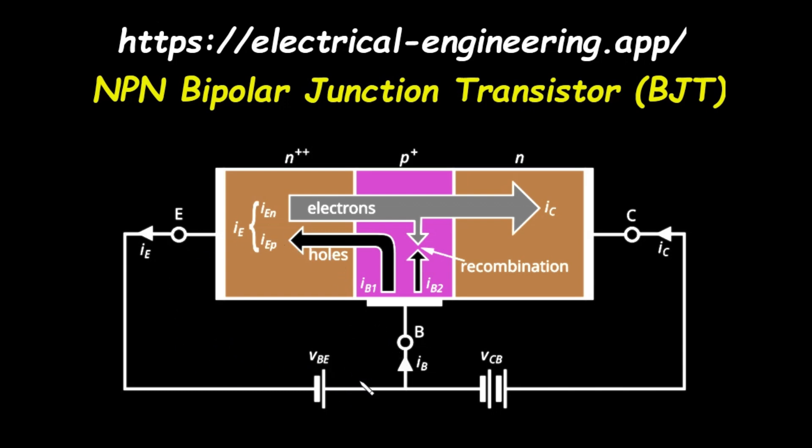The second voltage source, labeled V_CB, is connected between the collector and the base. Here, the polarity is reversed, the positive terminal is connected to the N-type collector, and the negative terminal is connected to the P-type base. This is called reverse biasing the collector base junction. A reverse bias increases the energy barrier and creates a wide depletion region with a strong electric field across it. With the circuit biased in this way, let's trace the flow of charge.